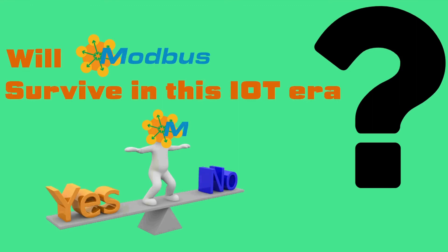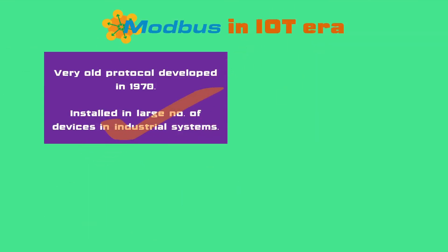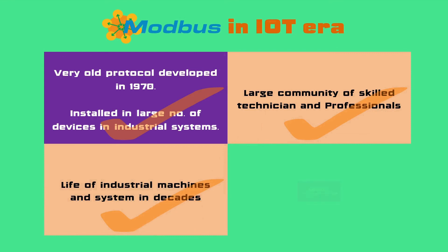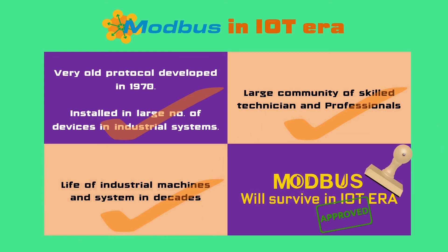A big question is: if the Modbus protocol is from the 1970s, why would anyone use it for the Internet of Things? Is it going to lose its significance or stay relevant in this IoT era? Modbus has a very large base of devices in which it is installed — many machines and systems have used it and are still using it. Due to the ongoing large-scale deployment of Modbus devices, there exists a large community of skilled technicians and professionals who rely on it for their expensive, complicated, and large industrial systems. As the useful lives of industrial machines and systems span decades, Modbus is going to co-exist with other modern communication protocols in this era of IoT.